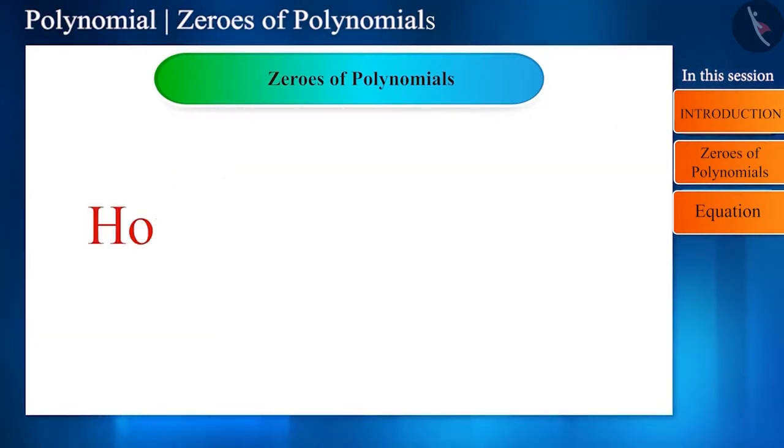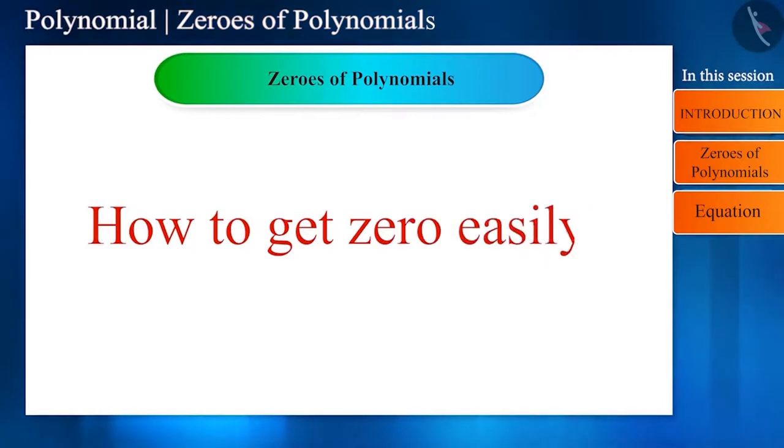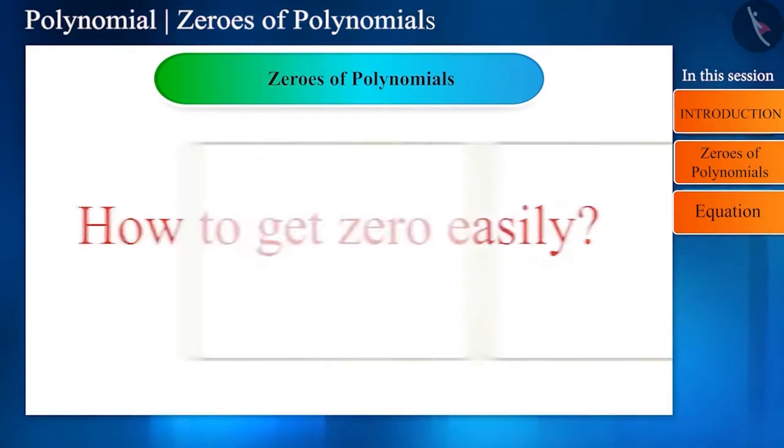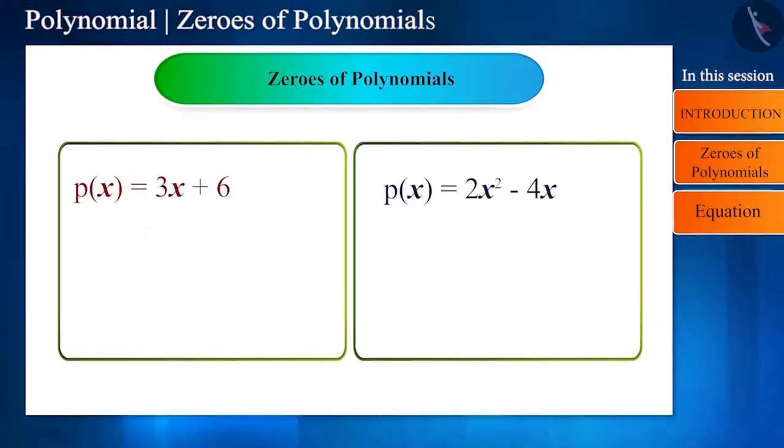But shall we continue to find the zeros by keeping different values in the polynomial? This can take a long time. Therefore, it is also solved if the polynomial is equated to zero—then we get the zero of the polynomial directly. So let's see how. Solving the first polynomial by equating it to zero, we get x = -2.